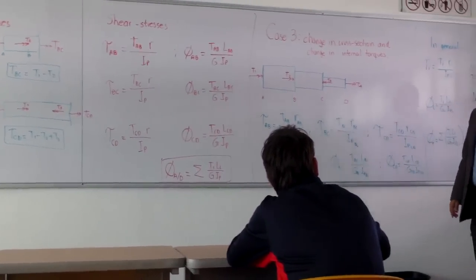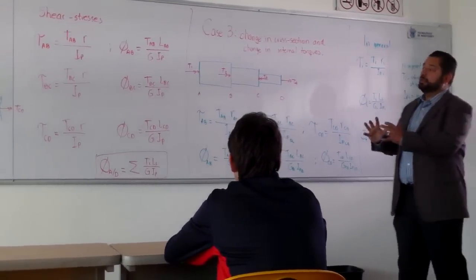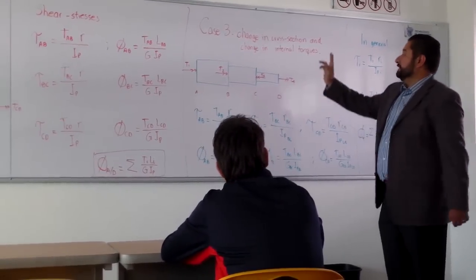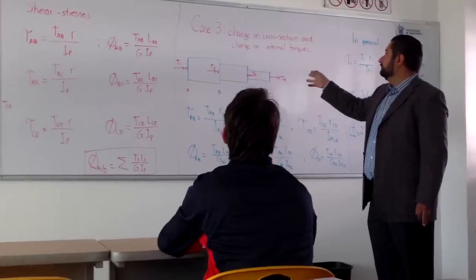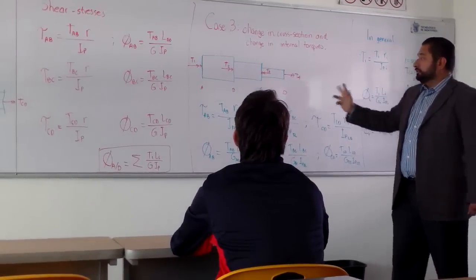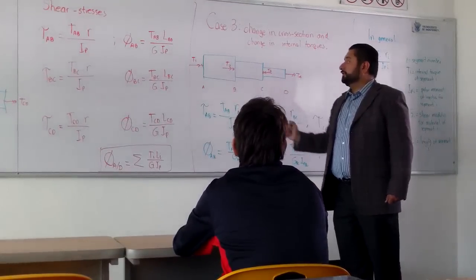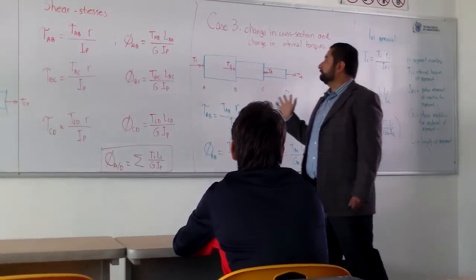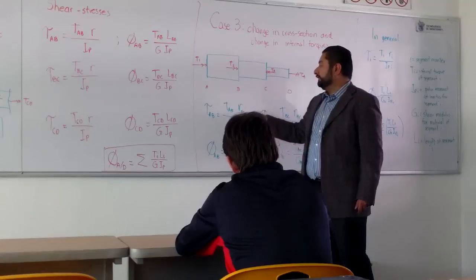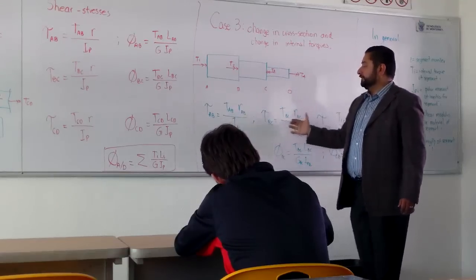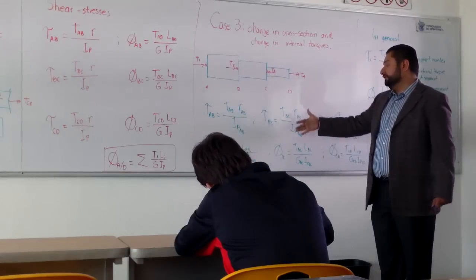Finally, we have the case number three, that is the combination of the two cases. And we have change in cross-sections and change in internal torques. We do sections again to find the values of internal torques and we have different polar moments of inertia and radius. So this is a summary of the angles and the shear stresses formula.